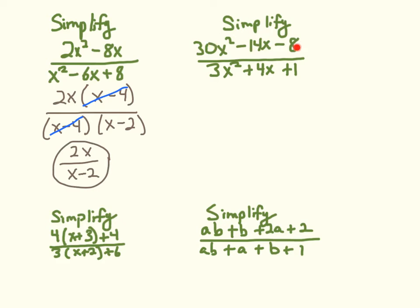This one: I have 30x squared minus 14x minus 8 all over 3x squared plus 4x plus 1. That numerator is a tricky one to factor.